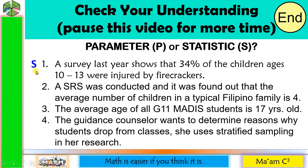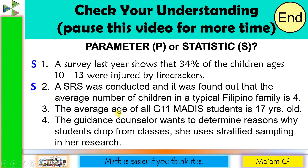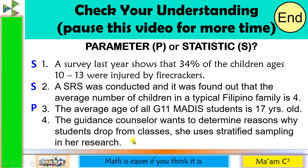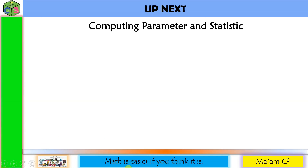Number two: a simple random sampling was conducted and it was found out that the average number of children in a typical Filipino family is four. There is a sampling method that was done, so definitely this is a statistic. Number three: the average age of all grade 11 MADIS students is 17 years old. 'All' means the whole population, so this is a parameter. Number four: the guidance counselor wants to determine reasons why students drop from classes — she uses stratified sampling in her research. Since sampling was done, this is just a sample, so this is a statistic. Our next lesson is computing parameter and statistic.